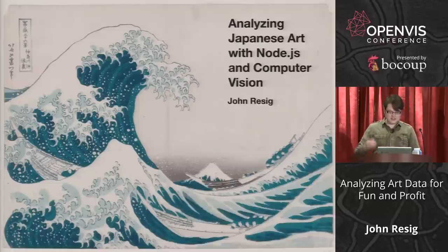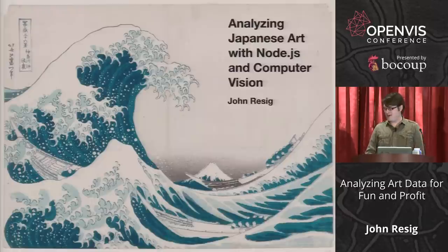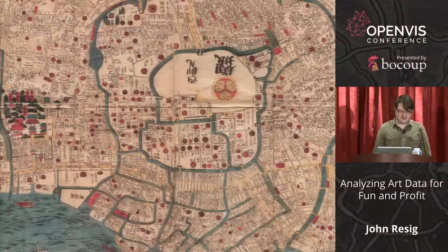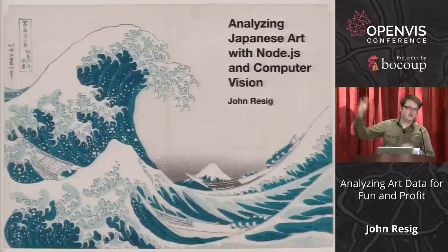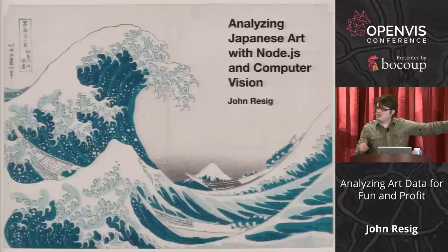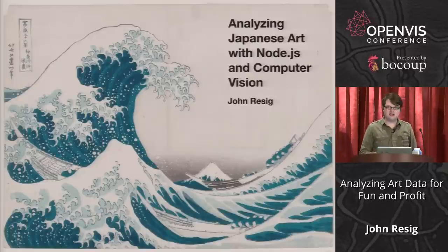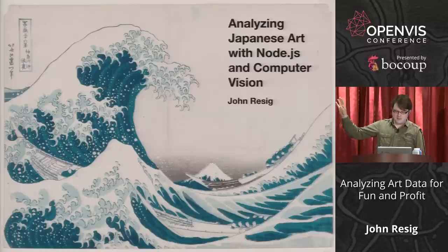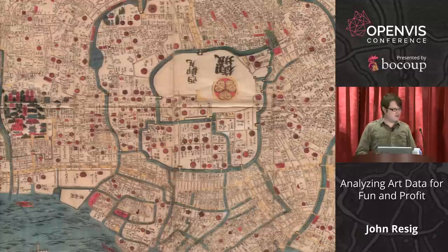I wanted to start with a super quick basic primer on the type of Japanese art I'm really into. I assume everyone recognizes this image — this is the incredibly famous Japanese print, The Great Wave by Hokusai. This print came from a time in Japan from the 1600s to the mid-1800s.